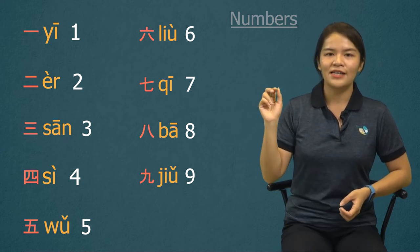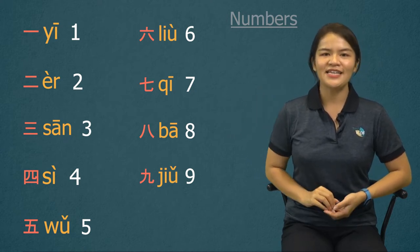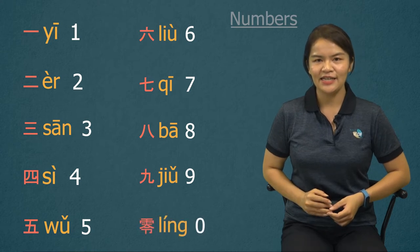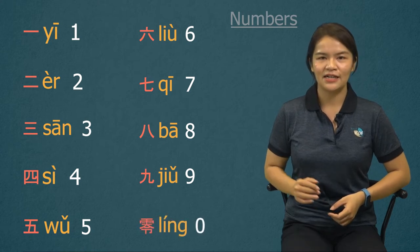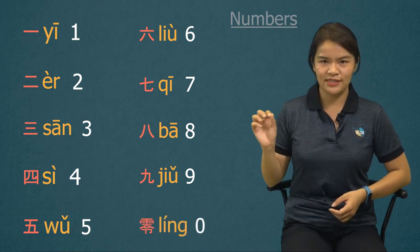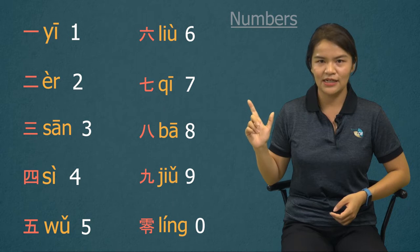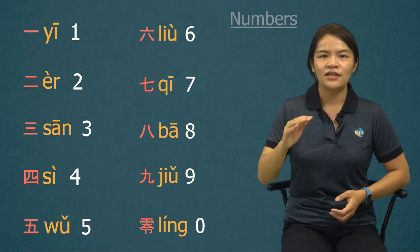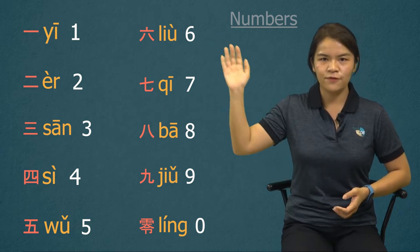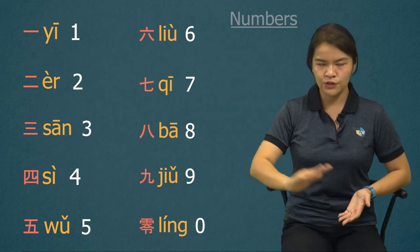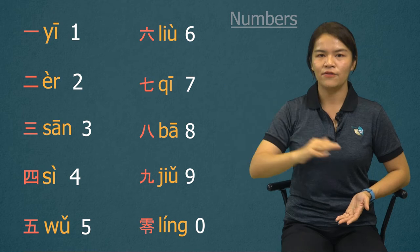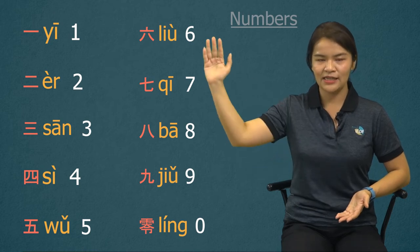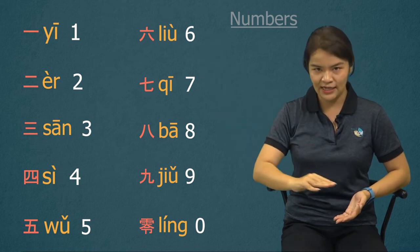Last but not least, 零. Number zero: 零, 零. It's a rising tone from low to high. Rising: 零, 零.